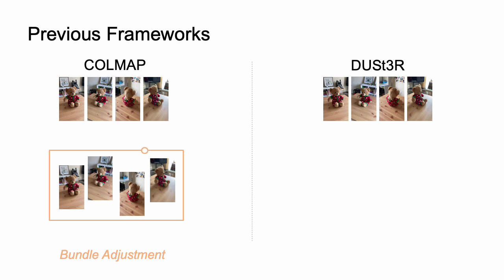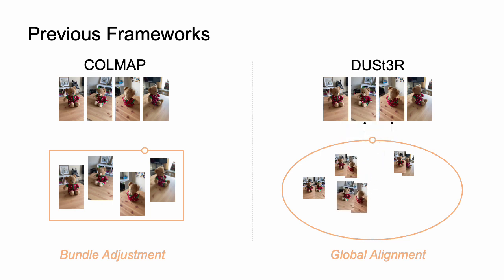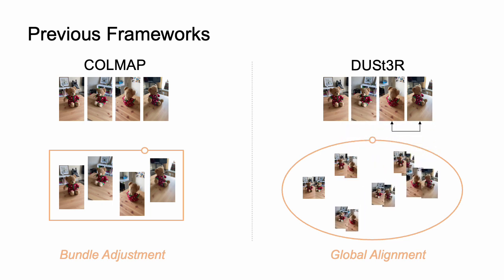DUSt3R uses optimization called global alignment. The input is a pair of images and the output is pixel-aligned 3D points. When you have several frames, it checks all possible pairs and then uses global alignment to merge the pairwise predictions into a final 3D result.